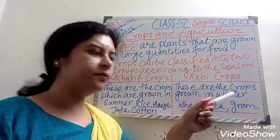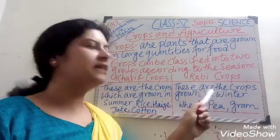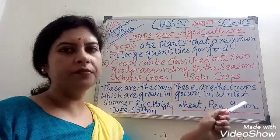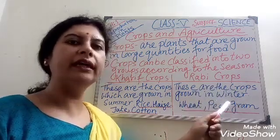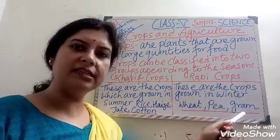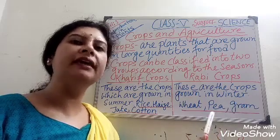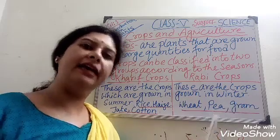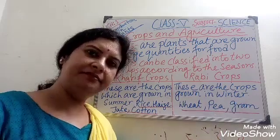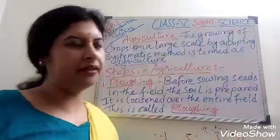And rabi crops — these are the crops grown in the winter season. Examples are wheat, pea, gram, etc.